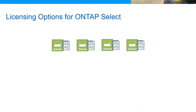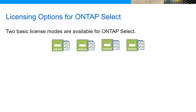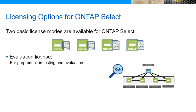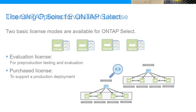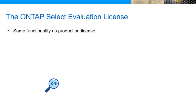Every ONTAP Select node runs as a virtual machine or VM on a hypervisor and requires a license. Two basic license modes are available for ONTAP Select Capacity Pools. Evaluation licenses, which are free, enable the deployment of pre-production environments. Production deployments require purchased licenses. Evaluation and production licenses support the same functionality for capacity pools.